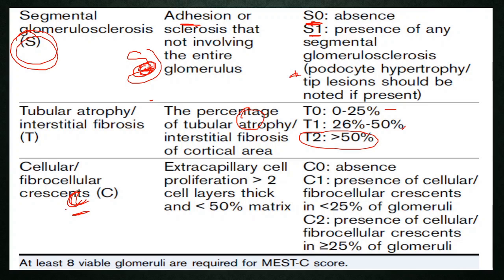Crescents are defined as extracapillary cell proliferation — parietal epithelial cells more than two cell layers thick. They must have less than 50% matrix. A score of C0 is given if absent; C1 if crescents are present in less than 25% of glomeruli; and C2 if present in more than 25% of glomeruli.